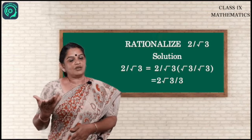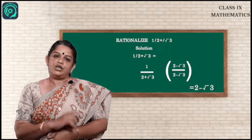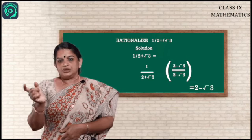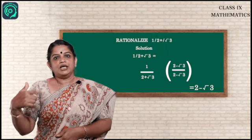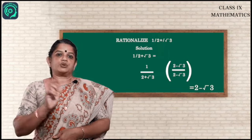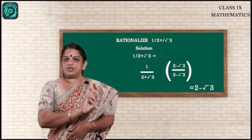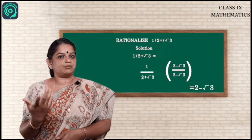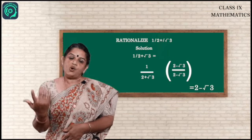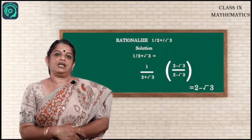Let us see one more example: 1 / (2 + √3). The conjugate of (2 + √3) is (2 − √3). Multiply numerator and denominator by (2 − √3): the numerator becomes (2 − √3). The denominator is in the form (a + b)(a − b) = a² − b², giving 2² − (√3)² = 4 − 3 = 1. So the answer is (2 − √3).